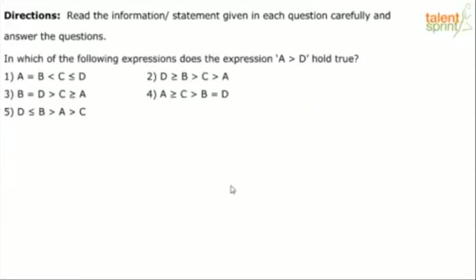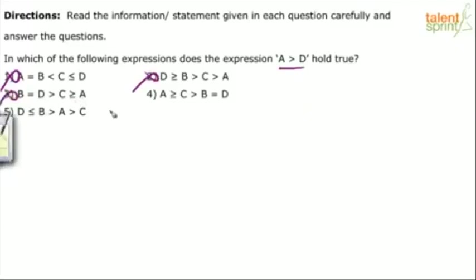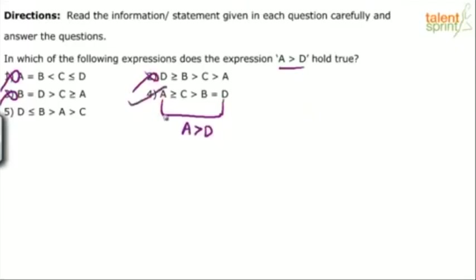Next one — I think this is the last question. In which of the following expressions does the expression A greater than D hold true? Here the conclusion is given; we have to find which statement is correct. A greater than D — first one is wrong; A is less than D. In the second option, A is less than anything, so wrong. The moment you see A less than something, you know the greater connection cannot come at all — eliminate third option too. In the fourth option, when you compare A with D, you get A is greater than D, so option 4 is correct. In option 5, A and D cannot be compared because of dissimilar inequalities. Option 4 is the answer.